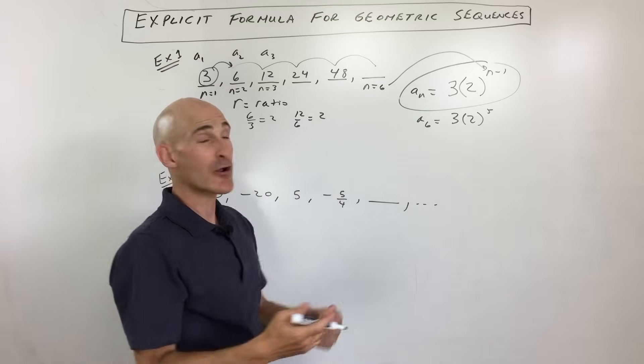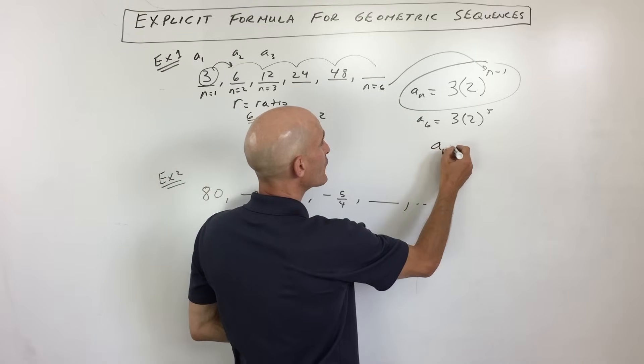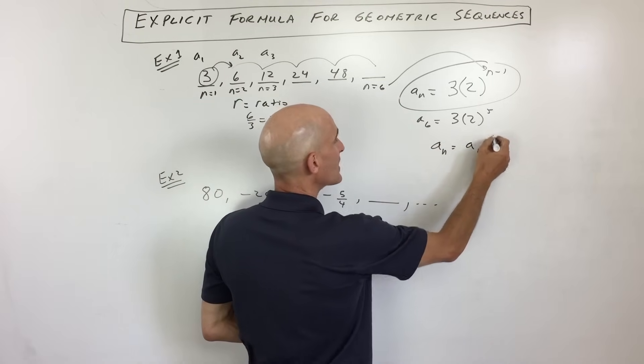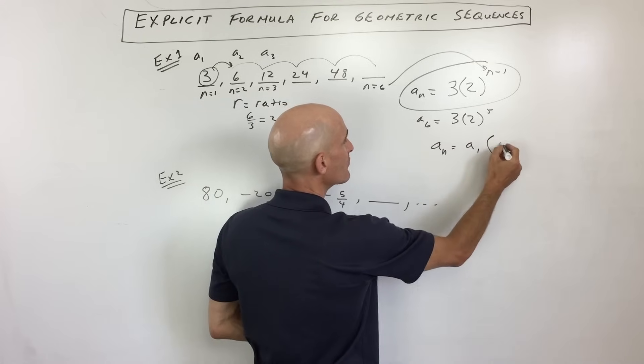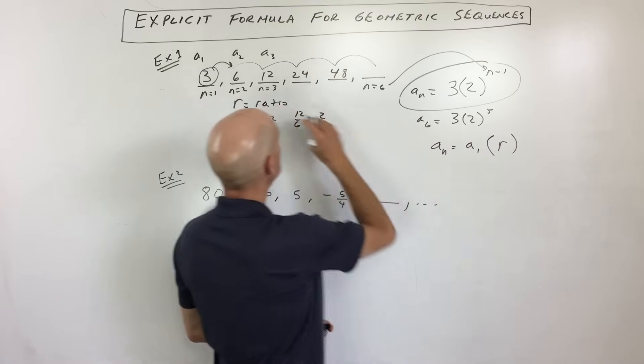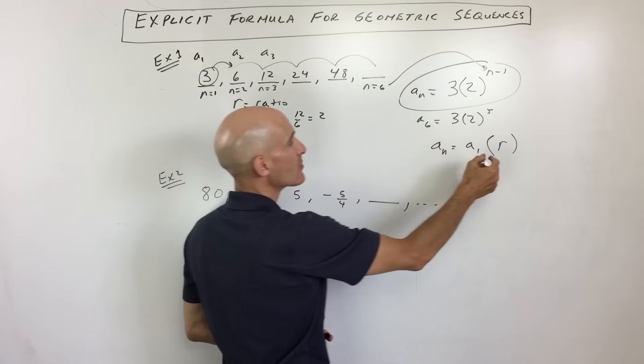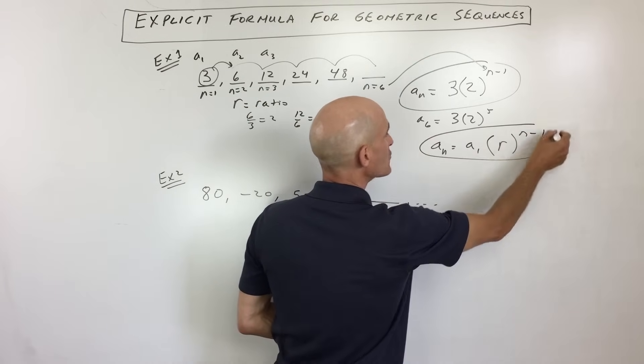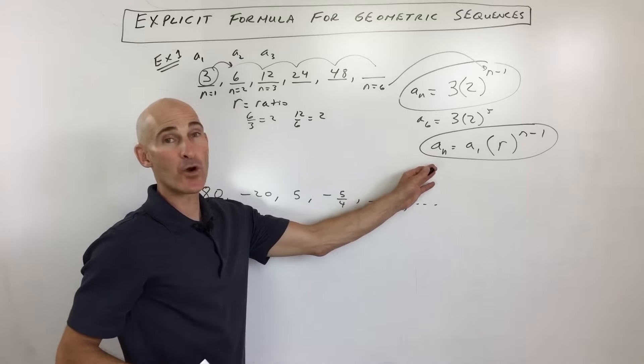Now, to write this in a more generic way so that you can use it, here's your formula right here. It's a sub n equals a sub 1, that's the value of the first term, times r, that's your common ratio, that's what you're multiplying by to get to the next term, to the n minus 1 power. It's always 1 less. So that's your formula.